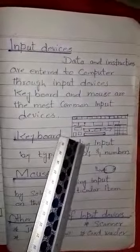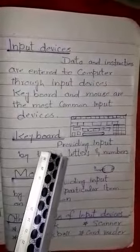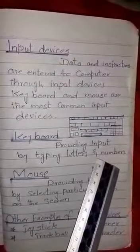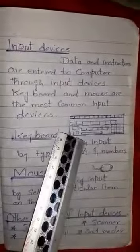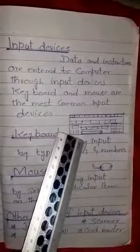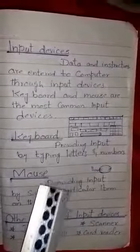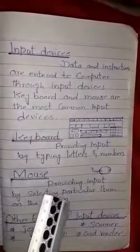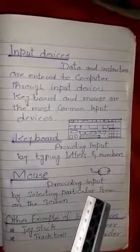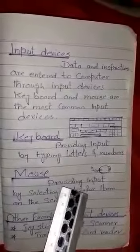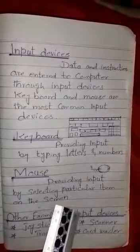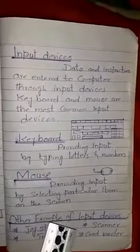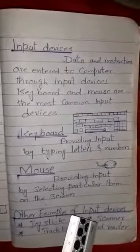The keyboard provides input by typing letters and numbers — we type letters and numbers on the keyboard. The second input device is the mouse, which provides input by selecting a particular item on the screen. The selection is done by pointing to the desired item and clicking the mouse button.